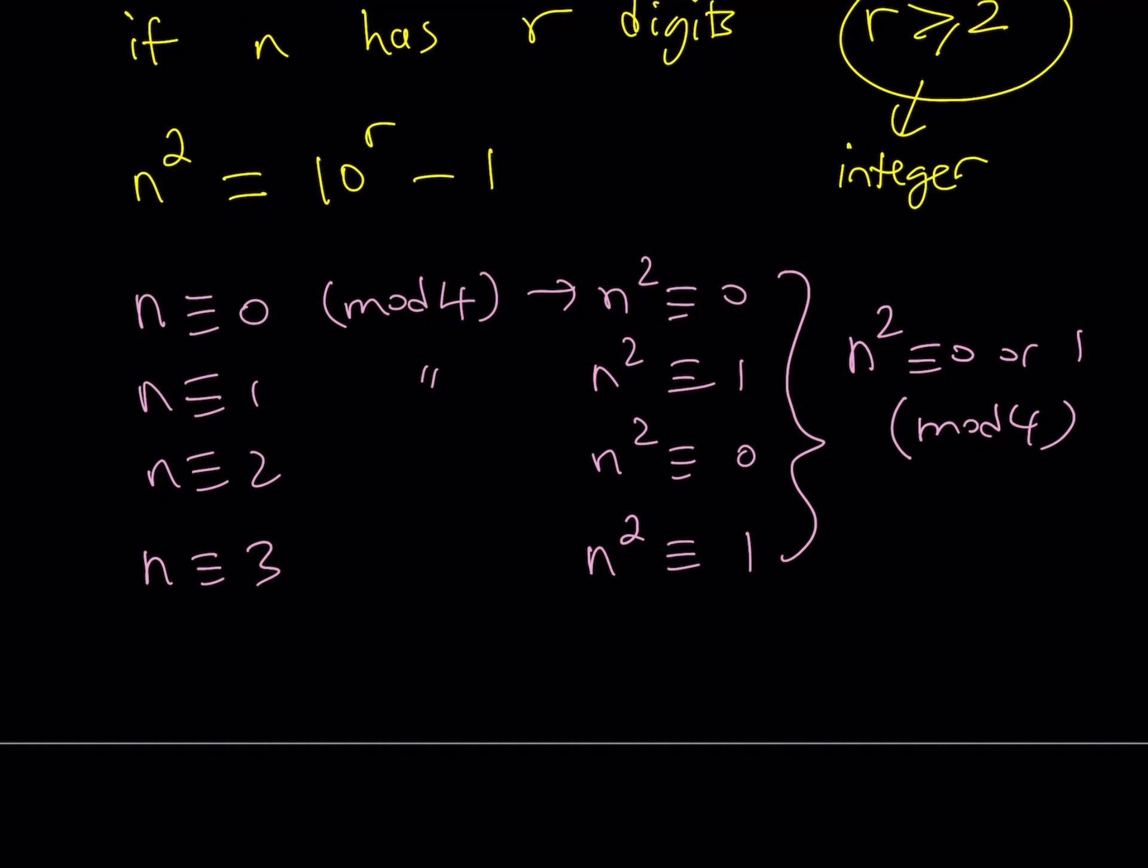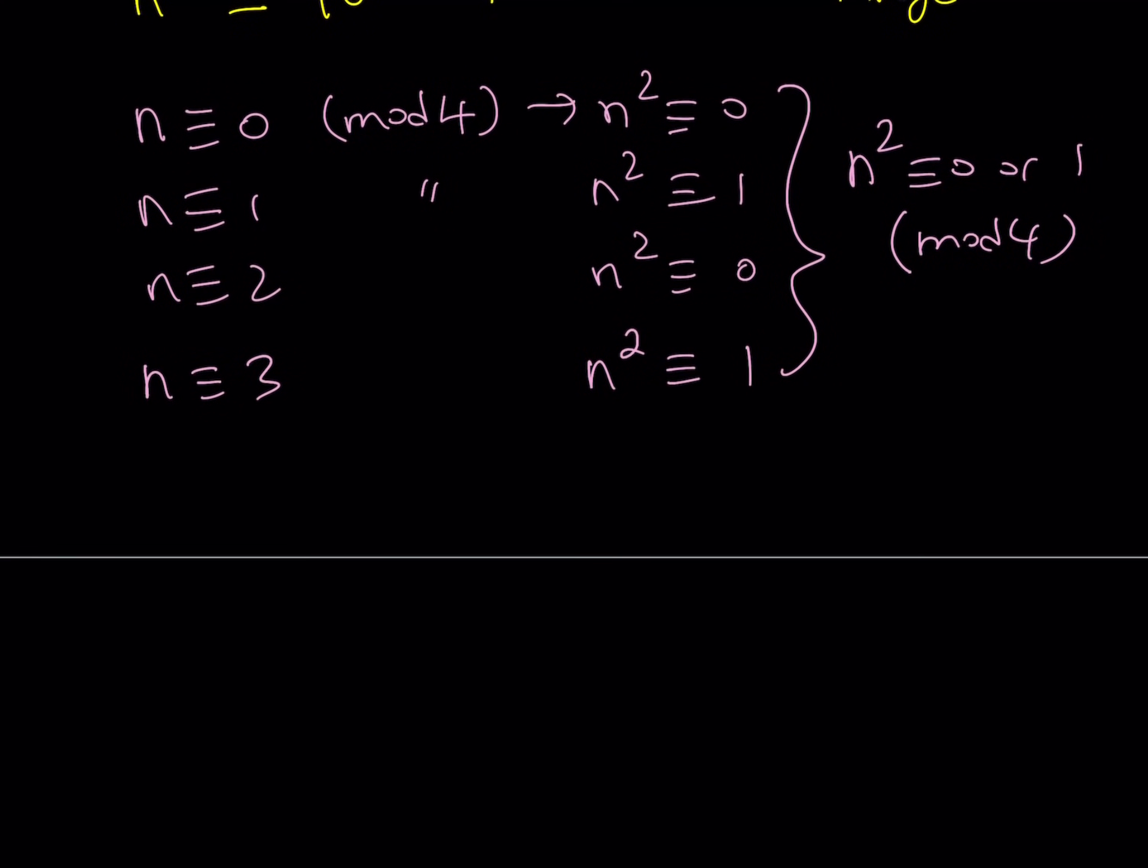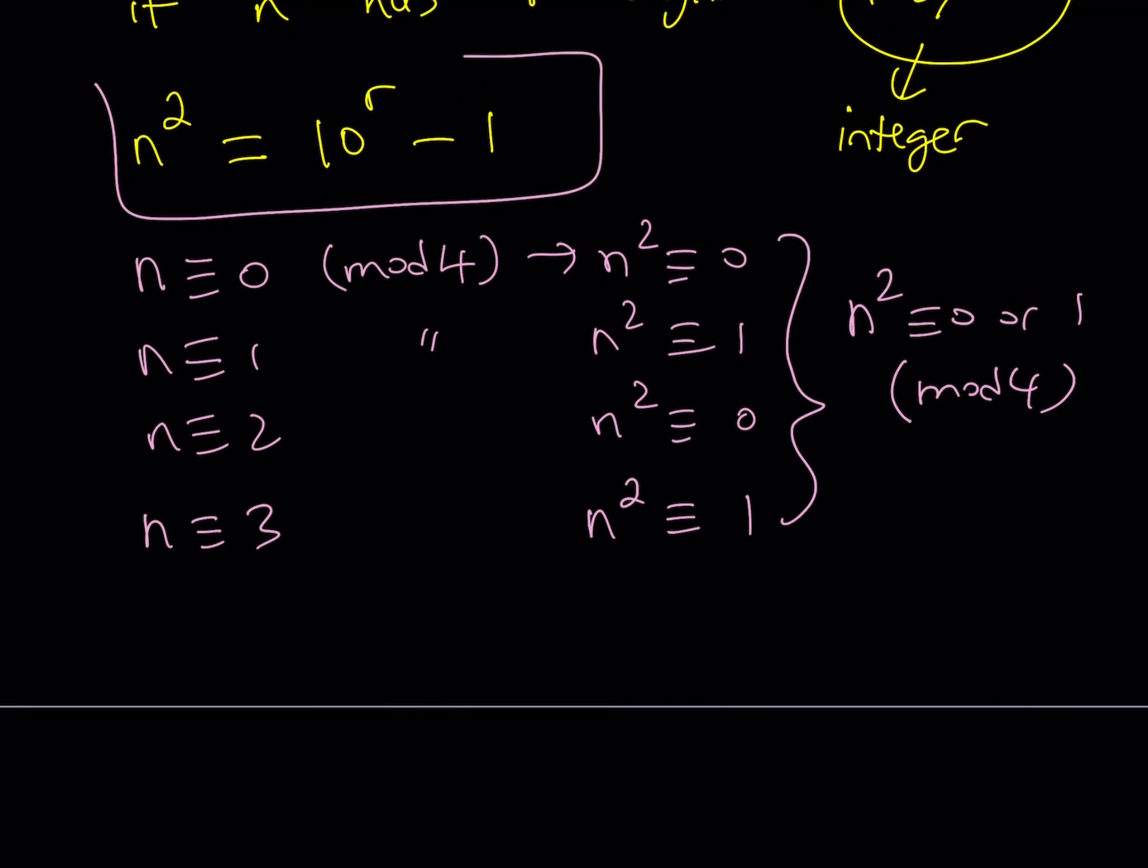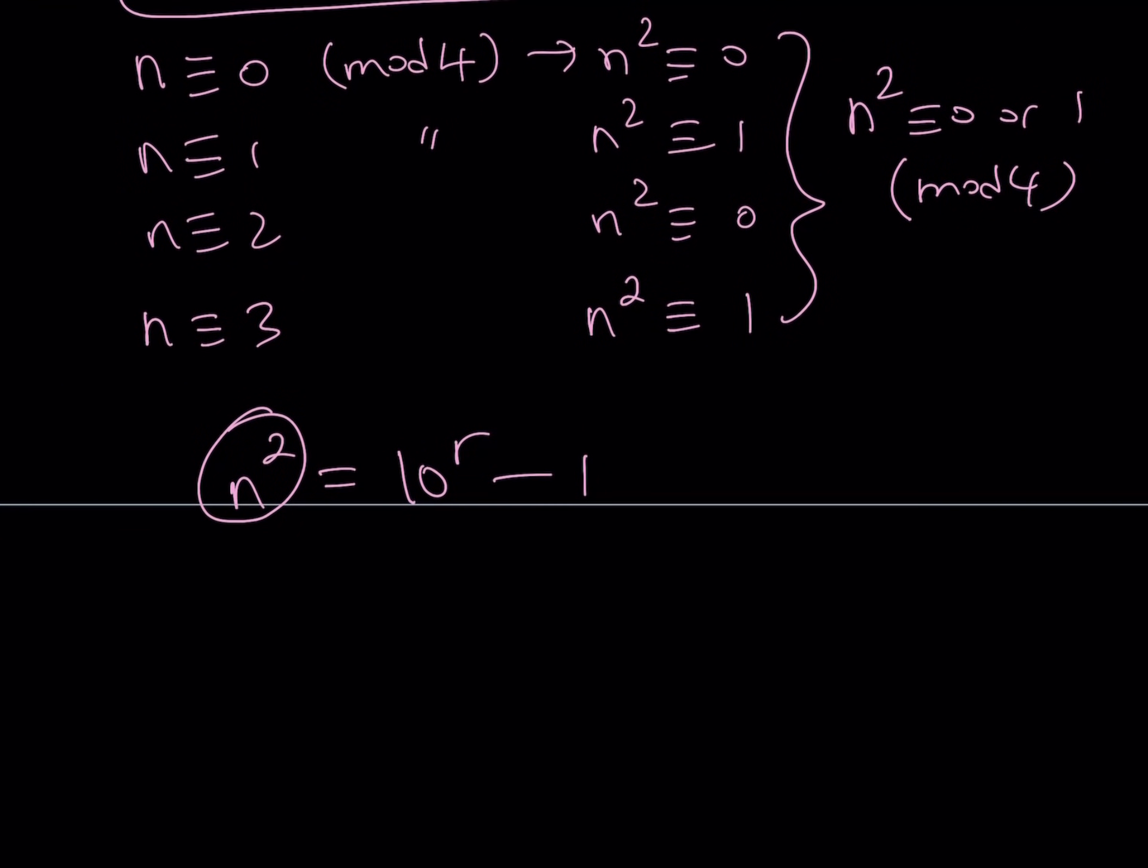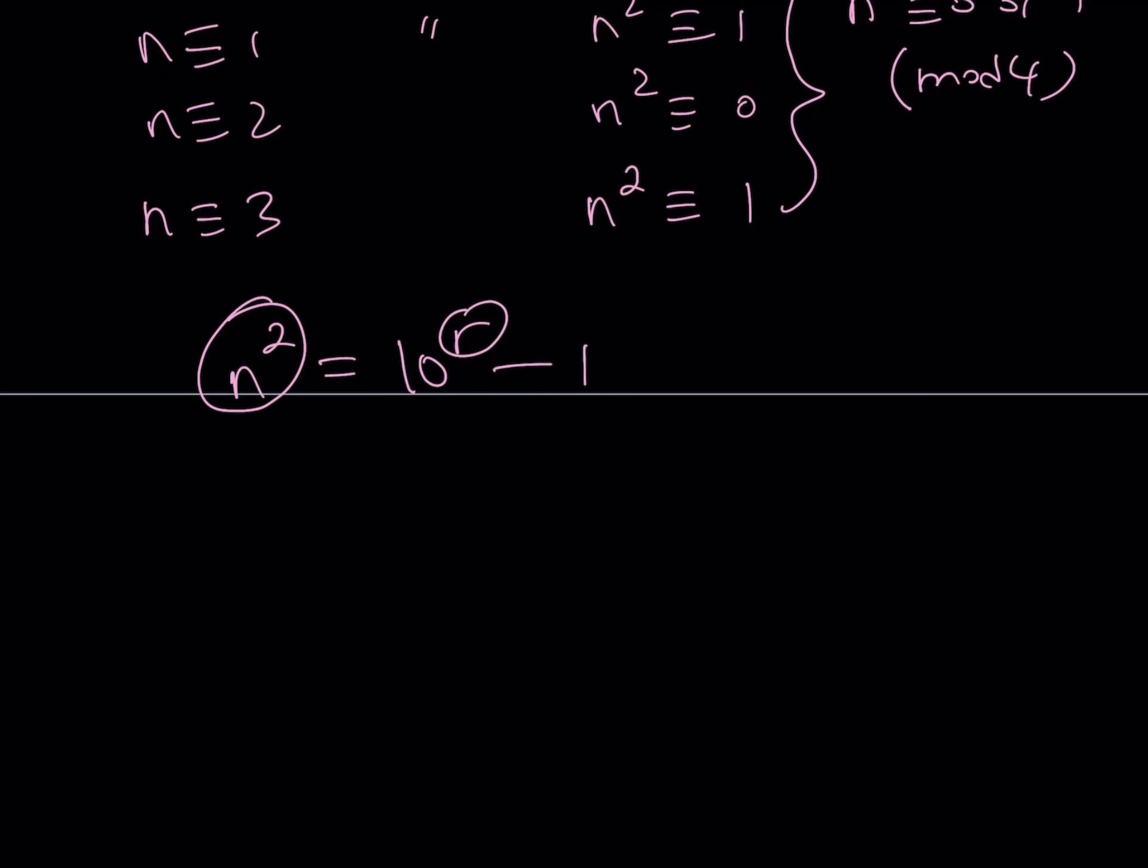Now we're going to be looking at this equation from that perspective. I have n squared equals 10 to the power r minus one. Now I know that this can only be one or zero for any integer and r is an integer too. What can happen with 10 to the power r minus one? Well, if r is one, as you know, 10 to the power r minus one is going to be nine. And that is going to be one mod four. So that's fine. And we already looked at that case, you know, we got n equals three from there.